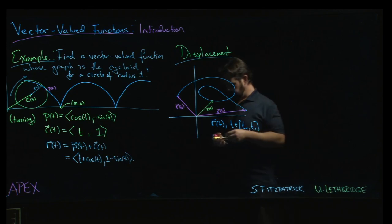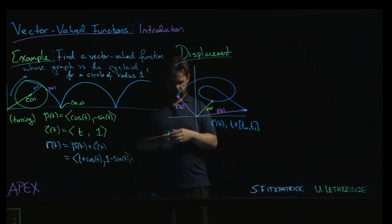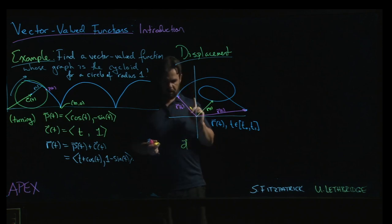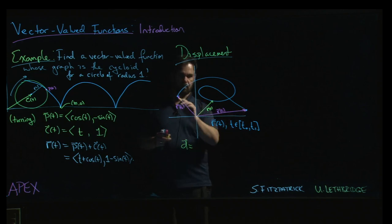So the displacement is a vector quantity, something which comes up and matters in a lot of physics contexts. And the displacement, it's a vector, but it's a constant vector. And what the displacement is, is it's just the difference between your final point and your initial point.